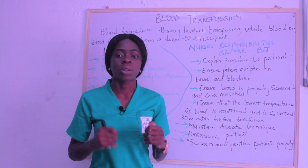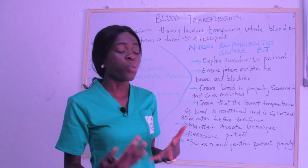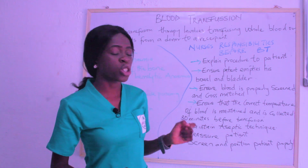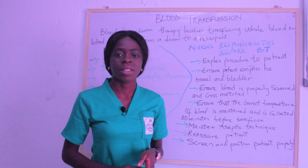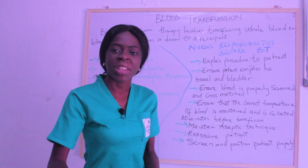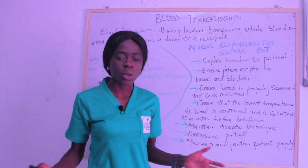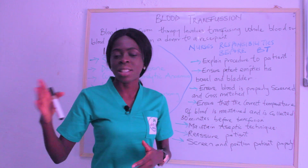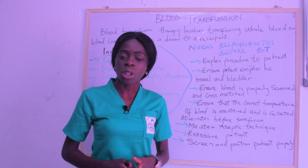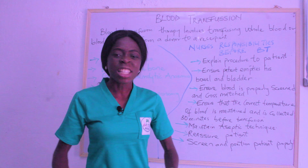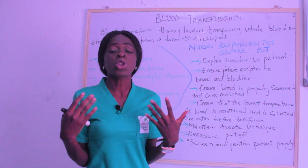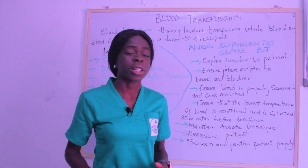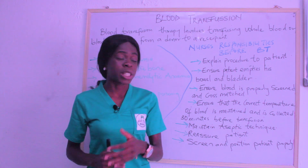Now let's look at the nurse's responsibility before blood transfusion. The first is to explain the procedure to your patient. You don't just meet the patient and start transfusing blood — you explain: 'I'll be giving you blood today because you have severe anemia, or because you are undergoing a major operation.' This procedure must always be explained to the patient.